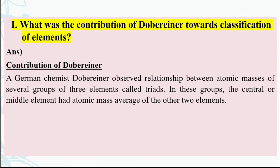Dobereiner was a German chemist who studied the relationship of atomic masses. Different groups were made, and every group had three elements — that is why every group was called a triad, since 'triad' means three. In these groups, the central or middle element had an atomic mass equal to the average of the other two elements.